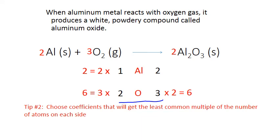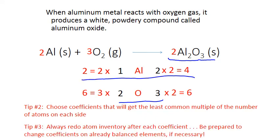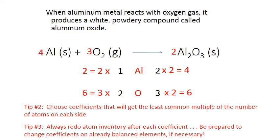Placing that two in front of Al₂O₃ has to multiply by every element in that formula, and aluminum is present there too. So we also multiply two by the aluminum to give four atoms of aluminum — and now aluminum is no longer balanced. My next tip is: always redo the atom inventory after each coefficient. Make sure you adjust every element accordingly and be prepared to change coefficients on elements you thought were already balanced. To get aluminum balanced again, the least common multiple between two and four is four. Change the coefficient on the left-hand side to four in front of the aluminum, and that gives four atoms on each side.